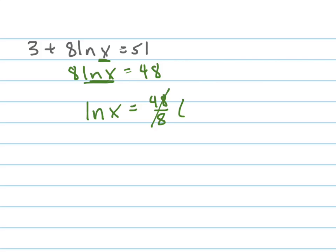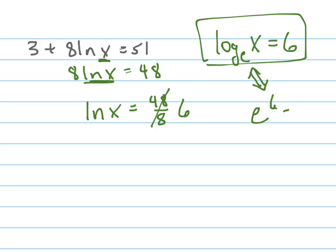And now to get rid of the natural log, there's a couple ways you could do it. You could use the equivalence to convert this. Here's really what you have: log base e of x equals 6. You could convert that using the equivalence into an exponential. So that would be e to the 6 equals x.